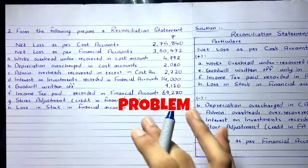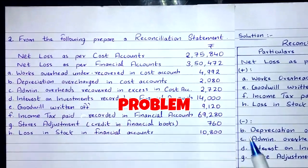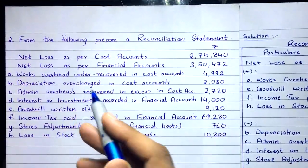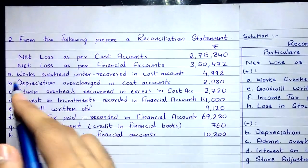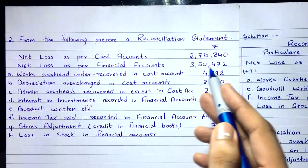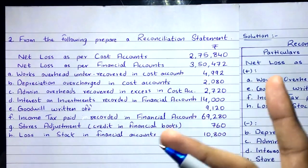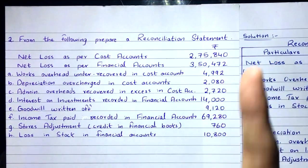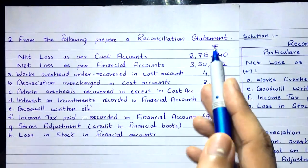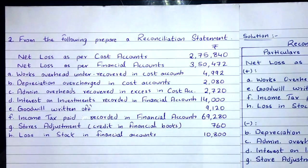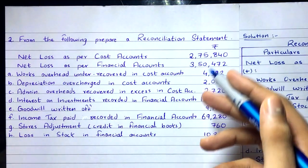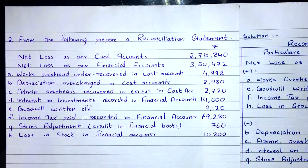The question says: from the following, prepare a reconciliation statement. We have net loss as per cost accounts of 2,75,840 and net loss as per financial accounts of 3,50,472. These two losses belong to only one company but are different because of the given transactions. We have to prepare the reconciliation statement and reconcile these two losses by taking these transactions into consideration.